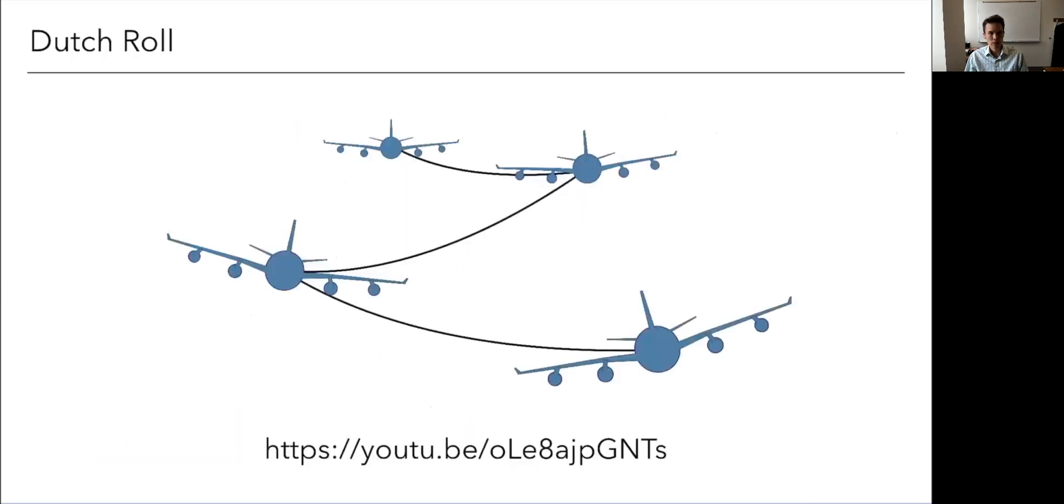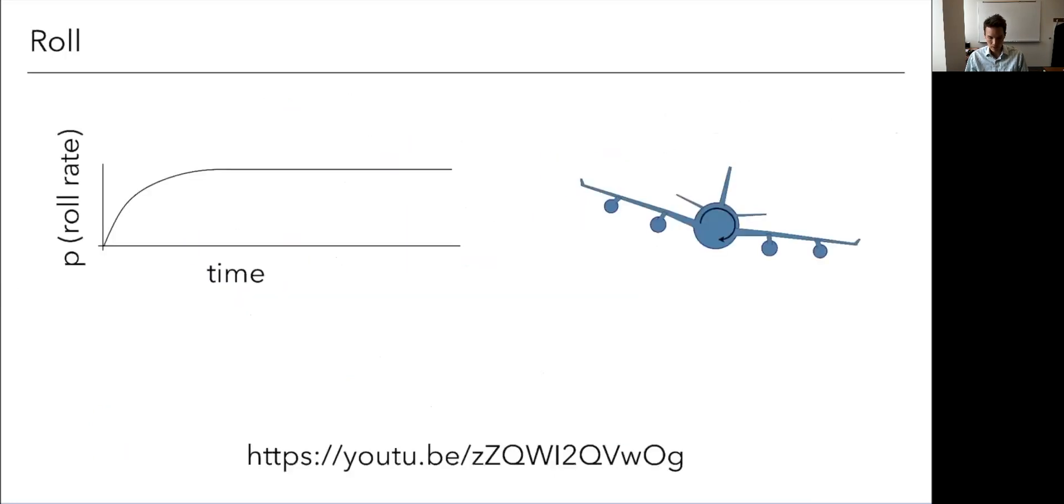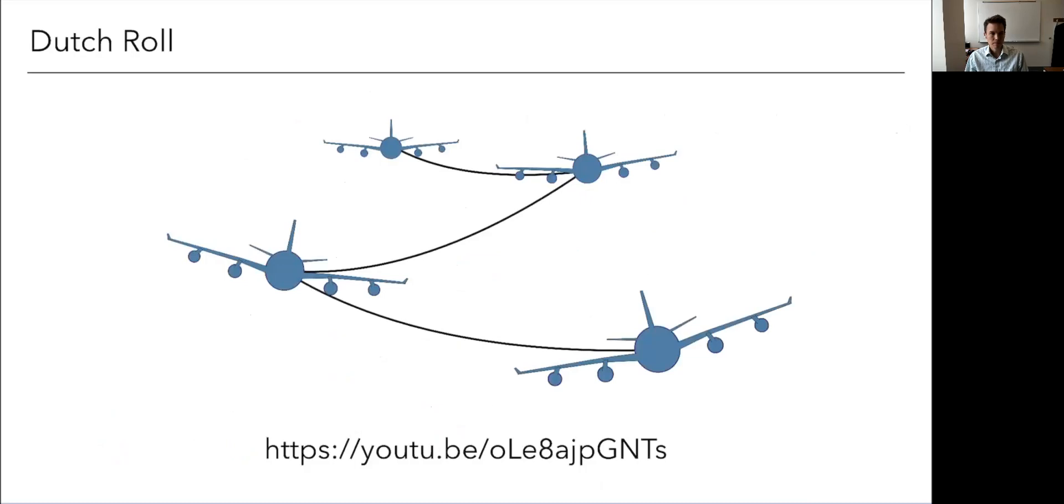Okay. And then the last one Dutch roll. This is the one if we go back as a complex conjugate pair. So there's some oscillation involved here. So it's like a coupling. I kind of think of it like as a skiing motion, maybe you're like coming up on these banks and there's like this coupling between your yawing and rolling. It's not so much a danger for like the spiral mode is, but it's much more sufficient damping because this kind of motion, it happens pretty quickly.